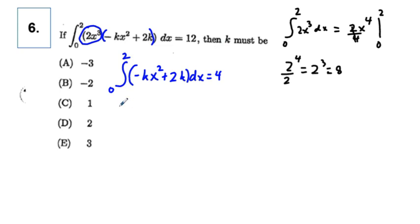Taking the integral, we're going to get negative kx to the third over 3 plus 2kx, and we're going to go from 0 to 2, and we know that's going to be equal to 4.